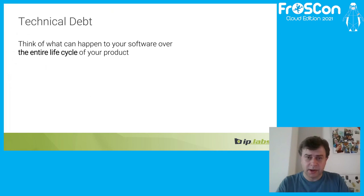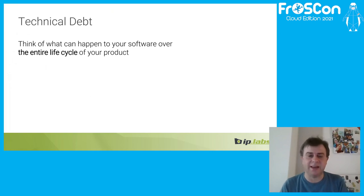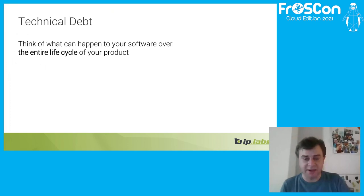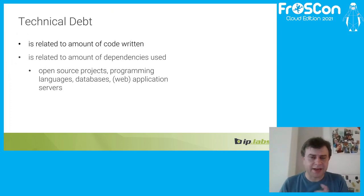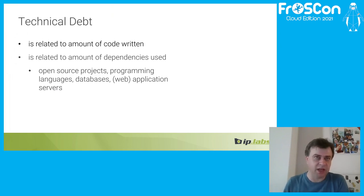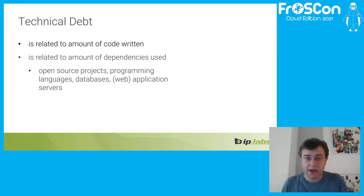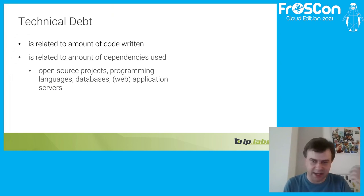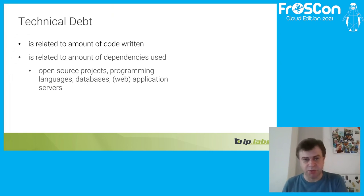For me, technical debt is the amount of code written from our side and the amount of dependencies used — everything that comes in via Maven or similar tools. This includes open-source projects and also databases like Postgres in certain versions, and web application servers like Tomcat, which bring their own dependencies tied to the standards they support.